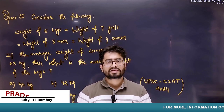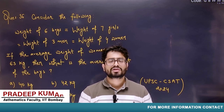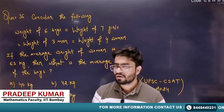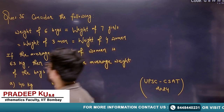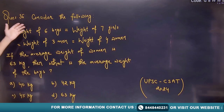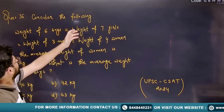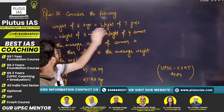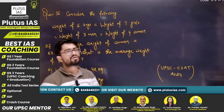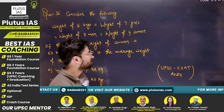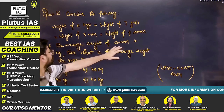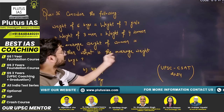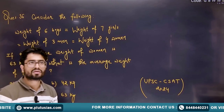Hello everyone. Today we will discuss two more questions from your UPSC CSAT 2024. The first question says: consider the following — the weight of 6 boys is equal to the weight of 7 girls, which is equal to the weight of 3 men, which is equal to the weight of 4 women. If the average weight of women is 63 kg, then find the average weight of the boys.